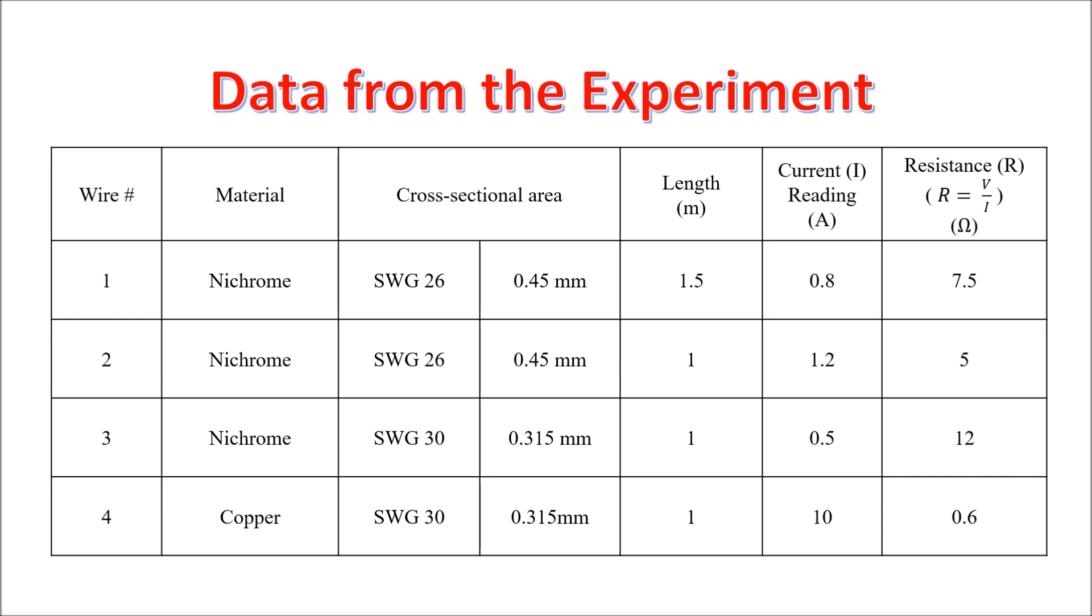To get the resistance, we divide the voltage by the current. So, the voltage that we used throughout the experiment is 6 volts. And these are the resistances. You can check how different factors affect the resistance.